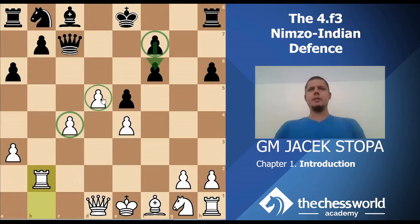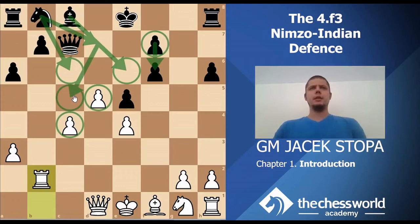Black has doubled pawns, and White has a very nice passed pawn on d5 that may become very strong. It hinders Black's ability to develop and bring pieces over. That's definitely one important factor. However, Black's potential plus is that White's pawns may become weaknesses.